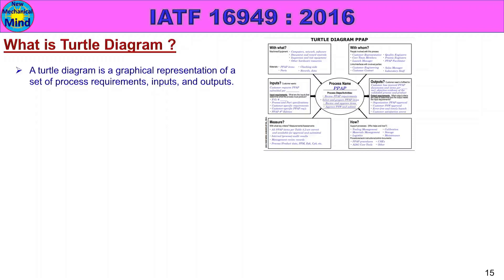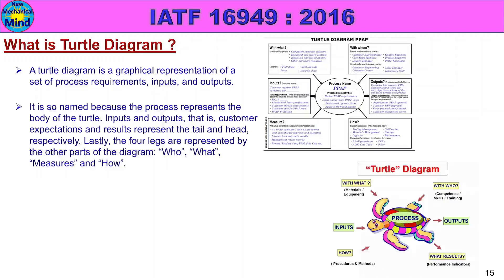What is a turtle diagram? A turtle diagram is a graphical representation that is very easy to understand. It is so named because the process represents the body of the turtle. Inputs and outputs — that is, customer expectations and results — represent the tail and head respectively. The four legs are represented by who, what, measures, and how.